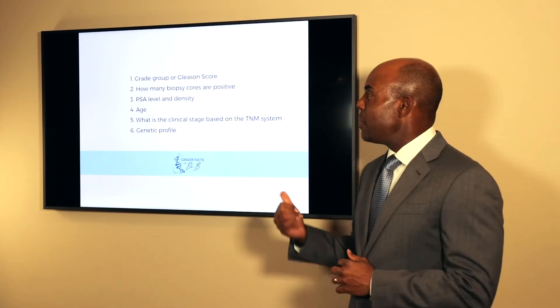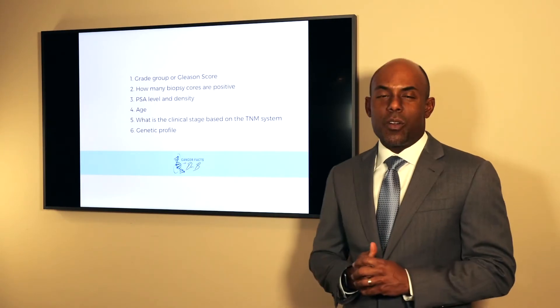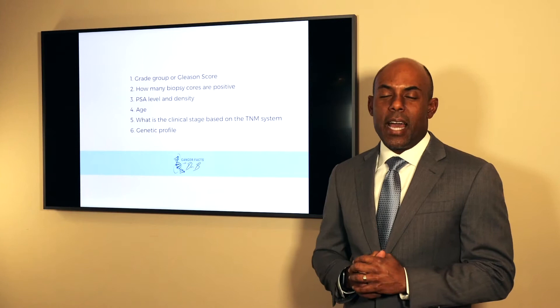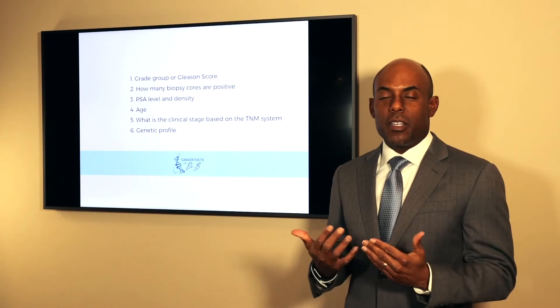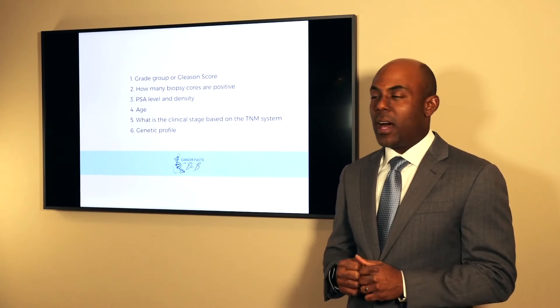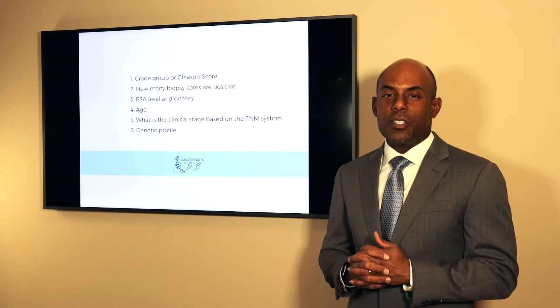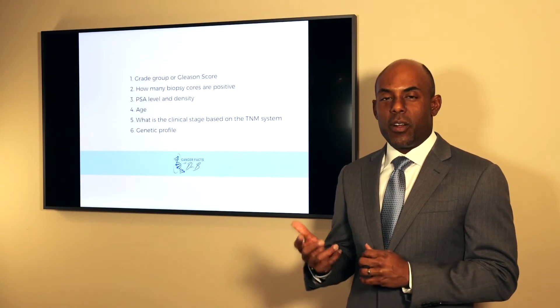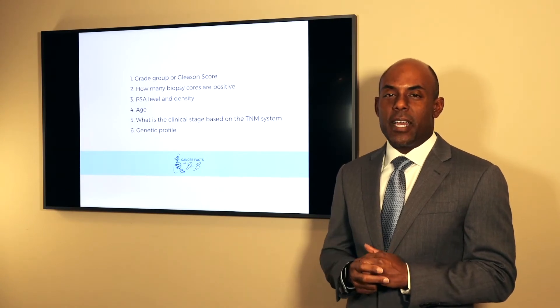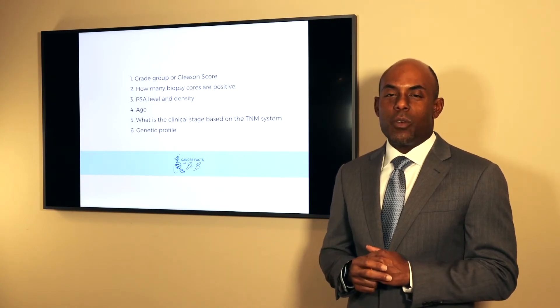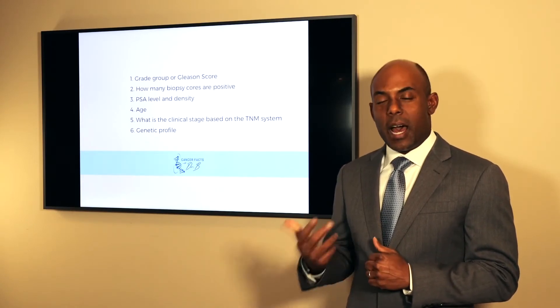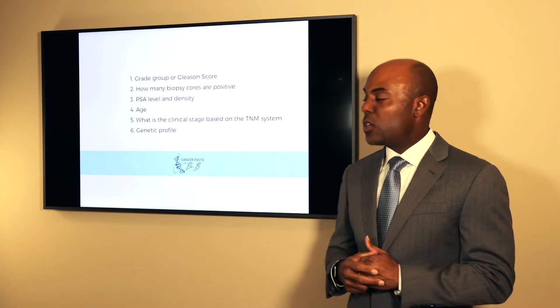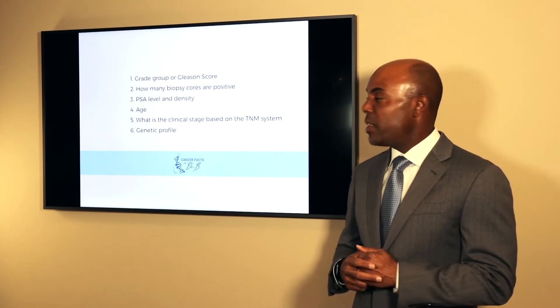Starting from the top, the grade group is basically how aggressive the cancer looks under the microscope to the pathologist. Typically, urologists will take 12 cores from different areas of your prostate, and then we look to see how many of those cores have cancer in them.